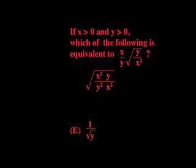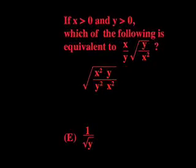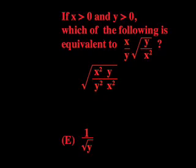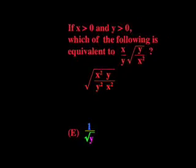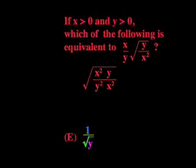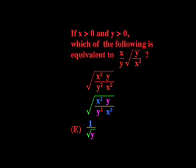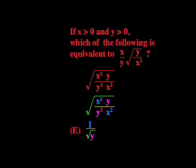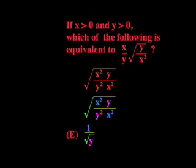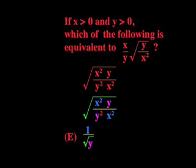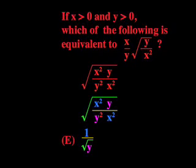Now we can compare this complex square root fraction with our simple answer E. We need to simplify everything so that we end up with a fraction with a one on top and a square root of Y on the bottom. We simply cancel the X squared from the top and bottom of the fraction, cancel a Y from the top and bottom, and we're left with a one on top of the fraction and a square root of Y on the bottom.